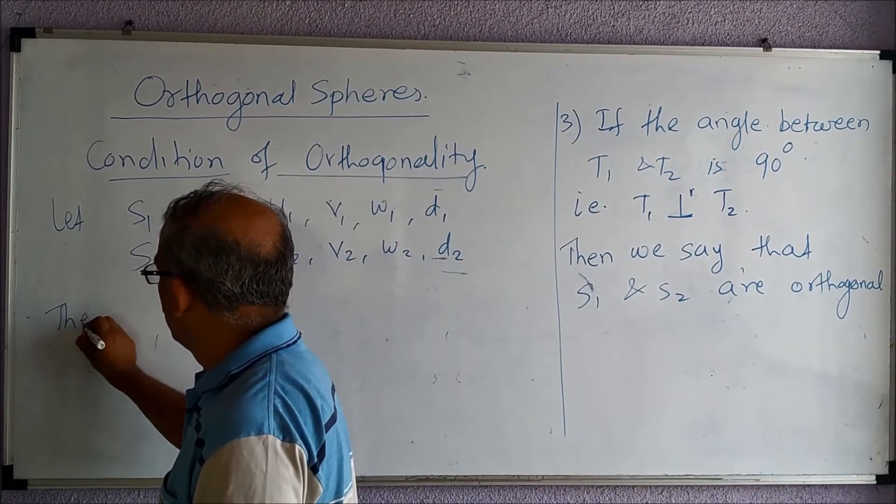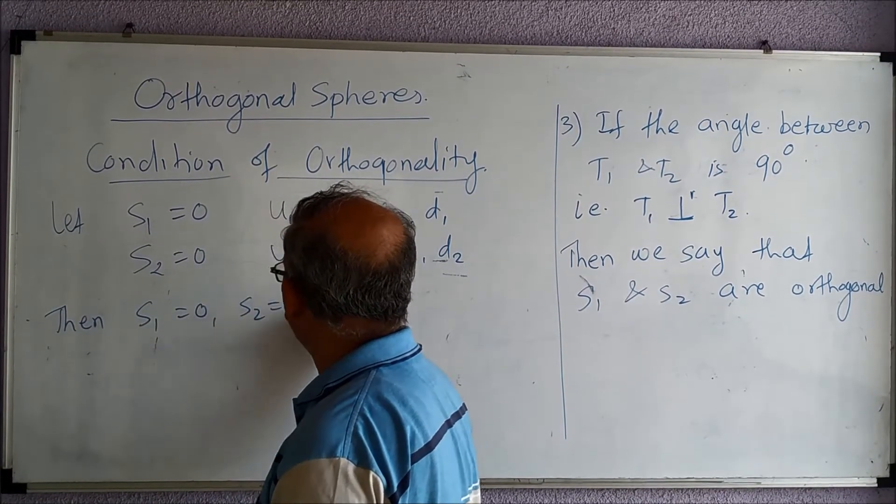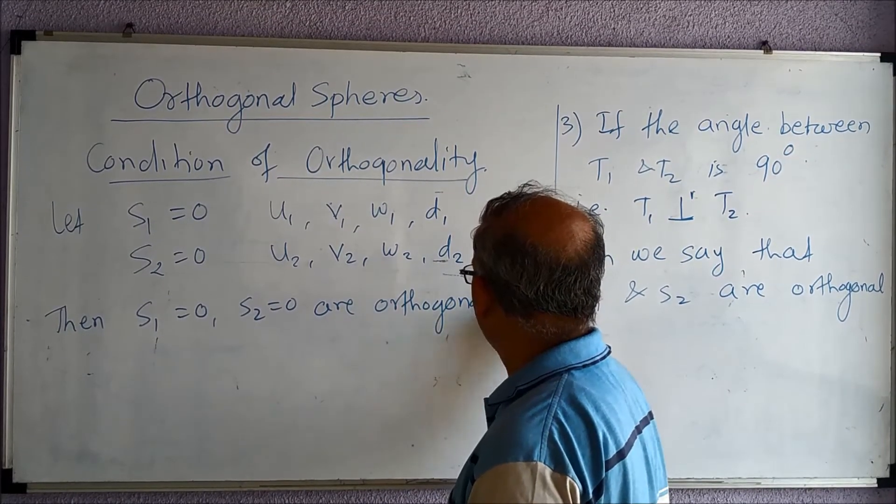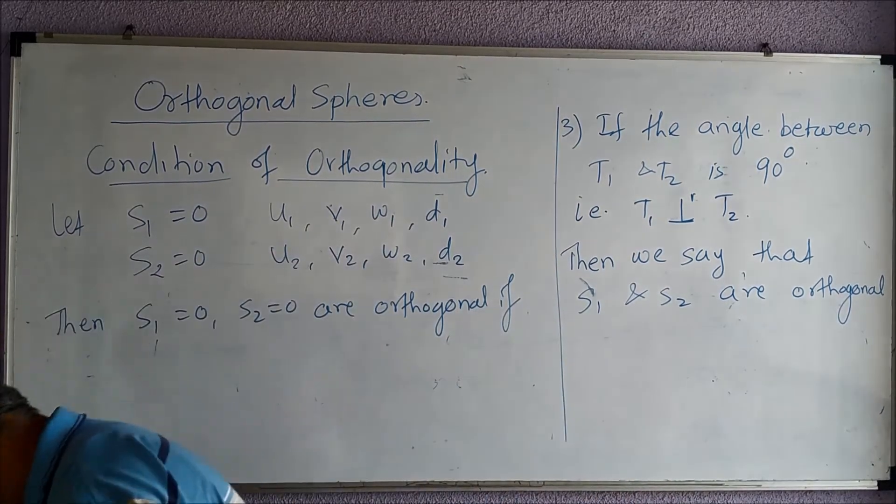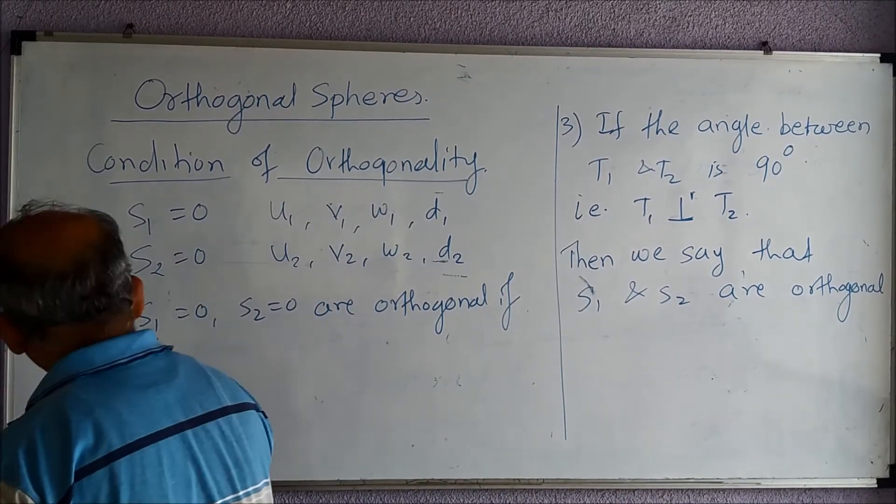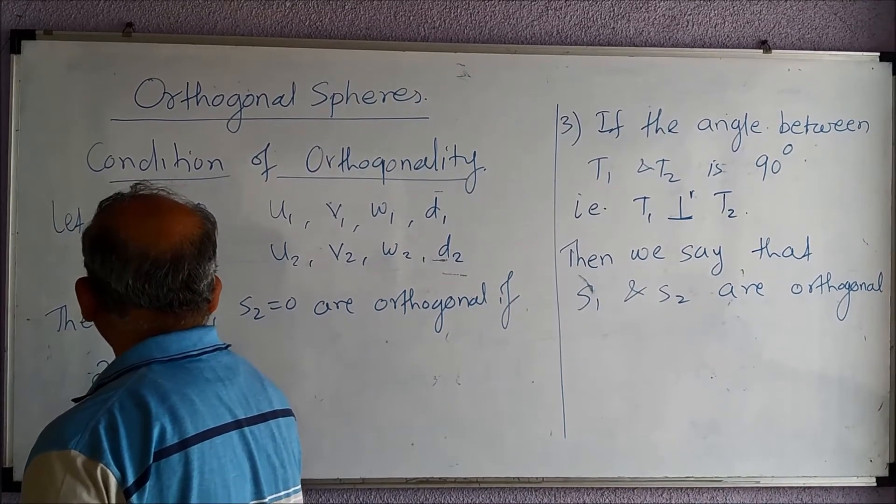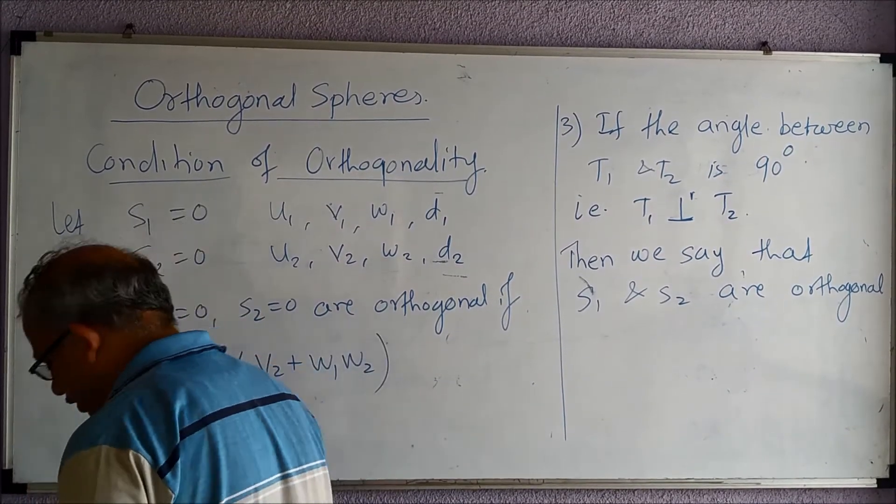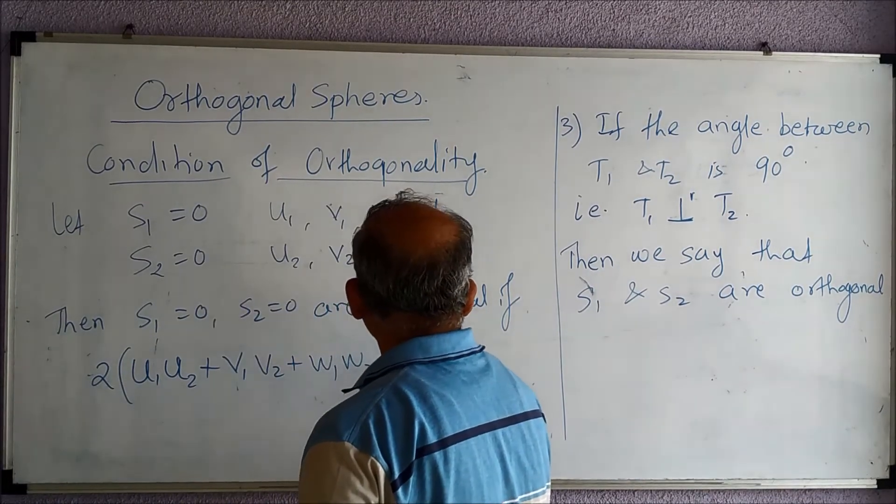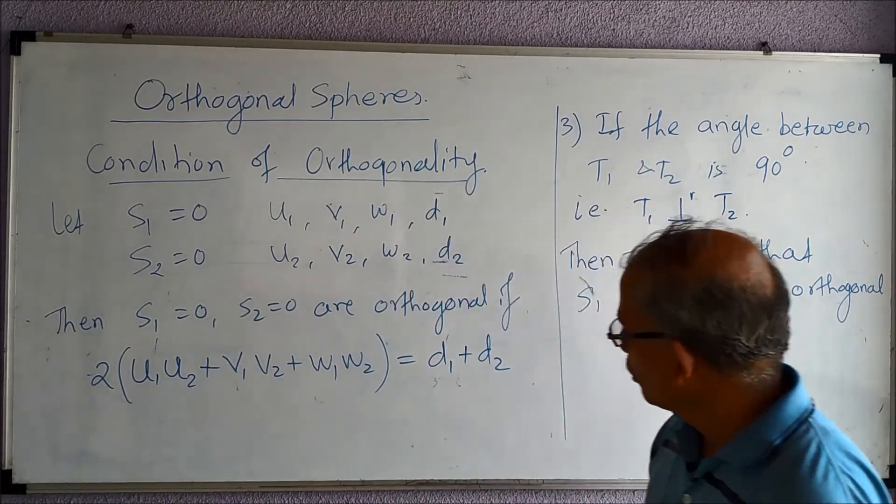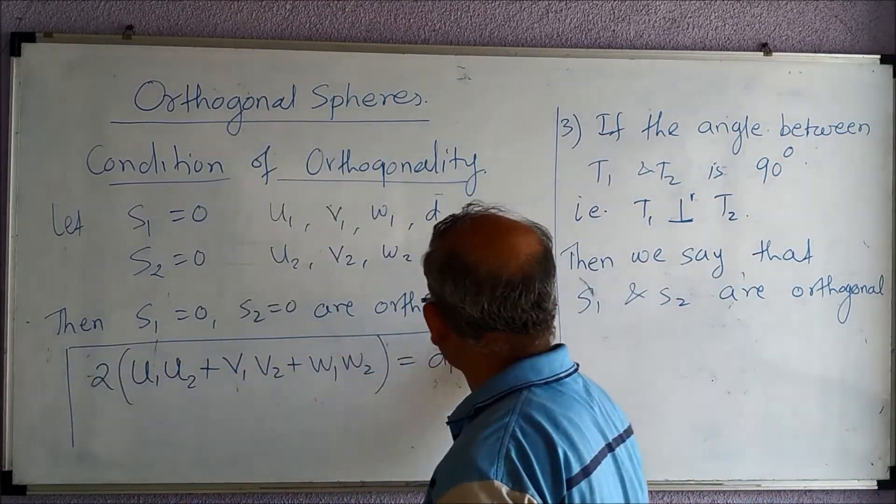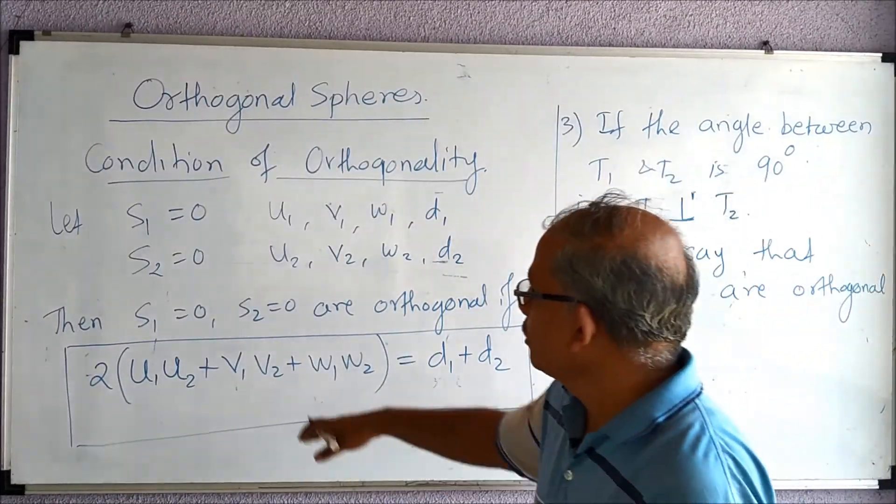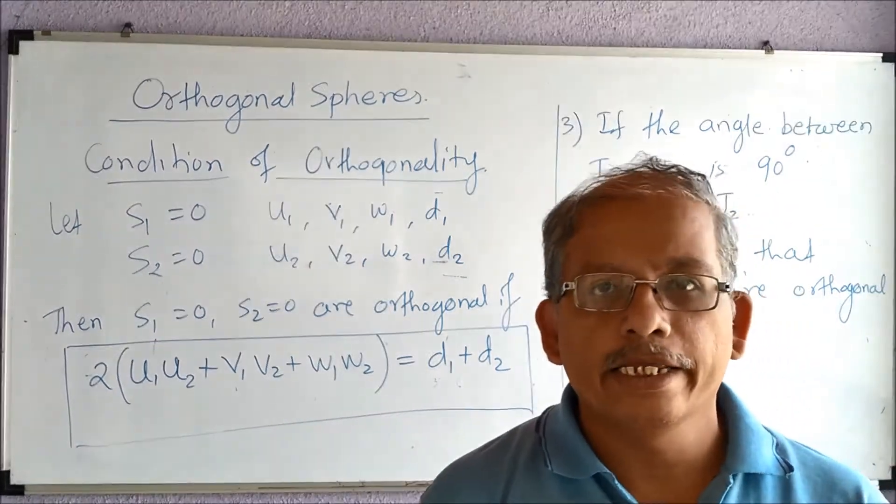Then s1 = 0 and s2 = 0 are orthogonal if the condition is: 2(u1·u2 + v1·v2 + w1·w2) = d1 + d2. Please note this condition. This is the condition of orthogonality. If you observe that this is satisfied, surely the two spheres are orthogonal.